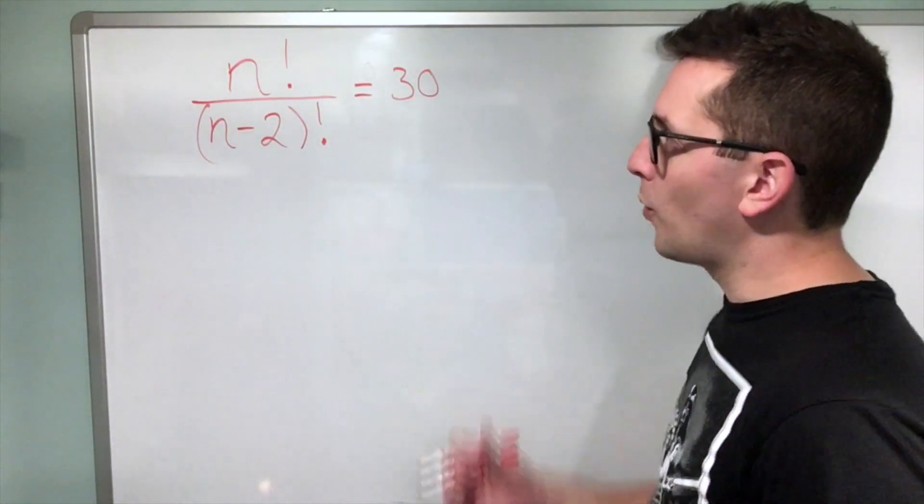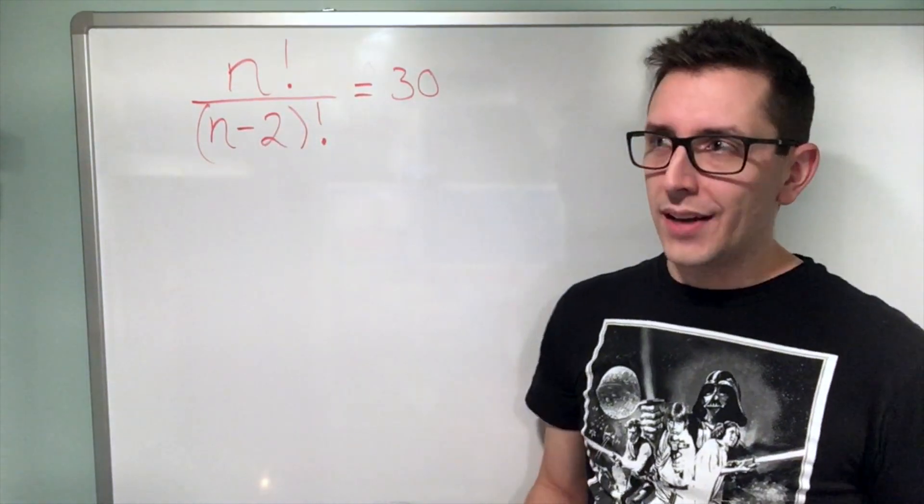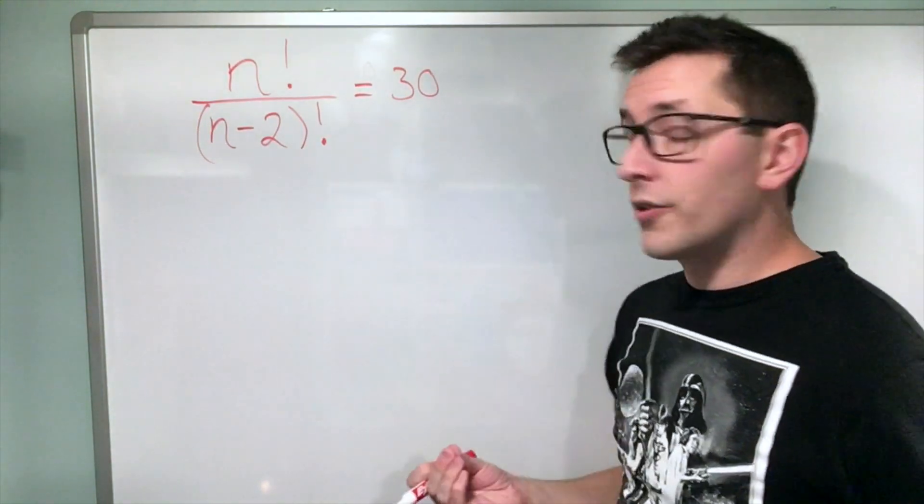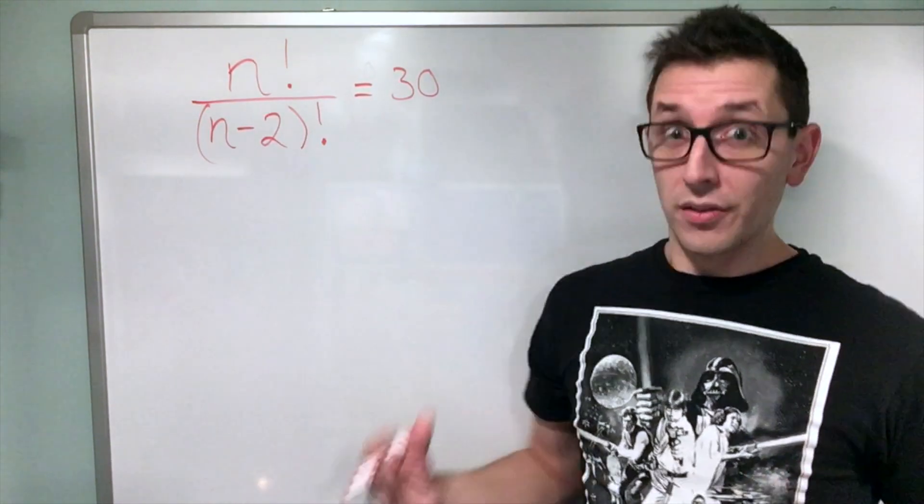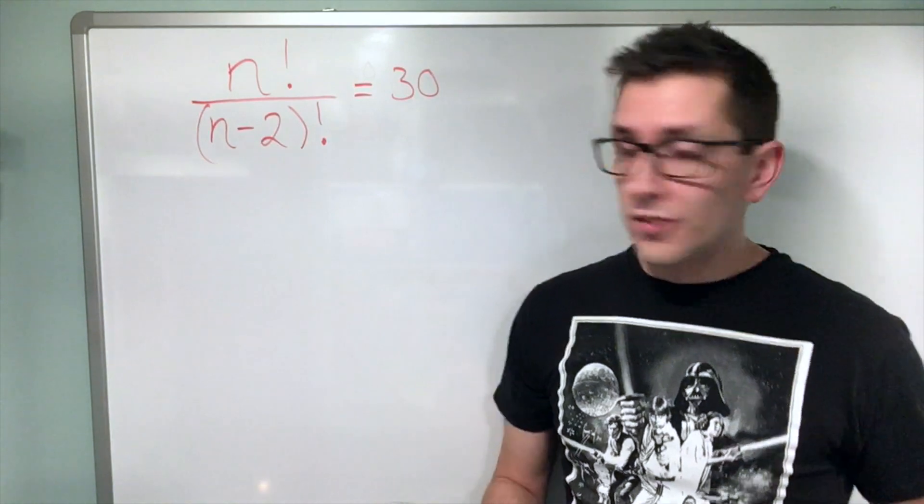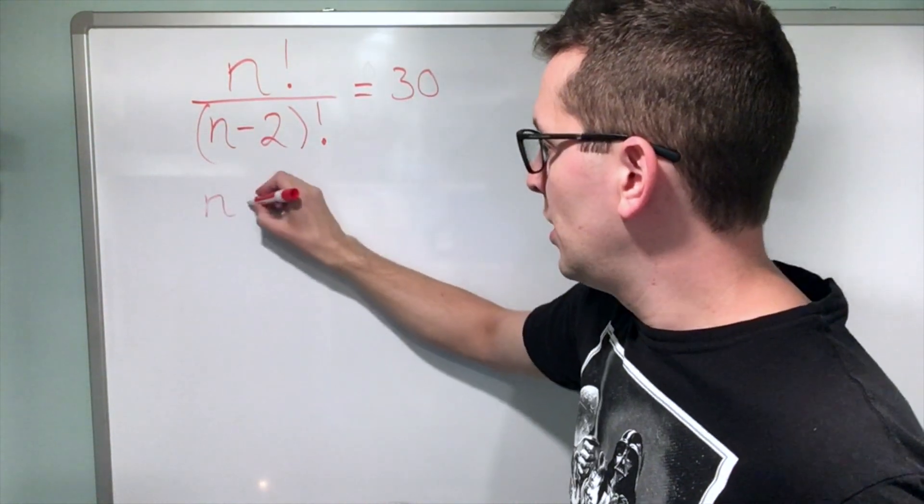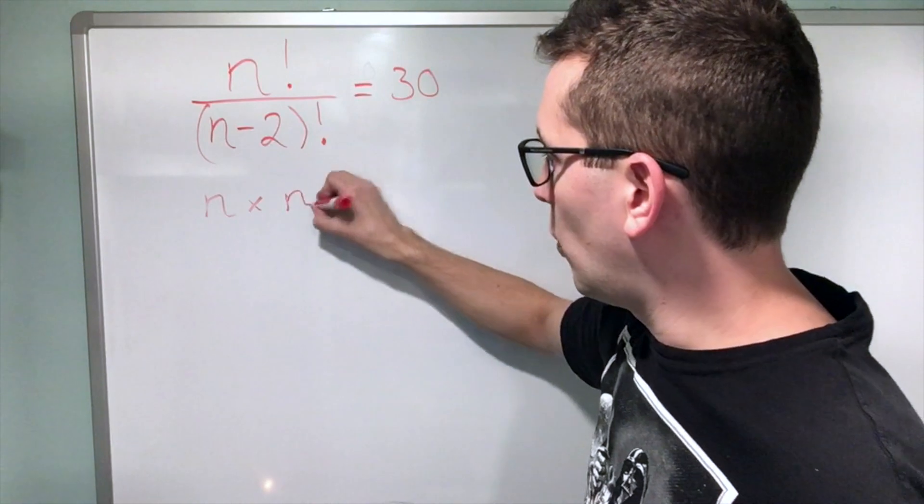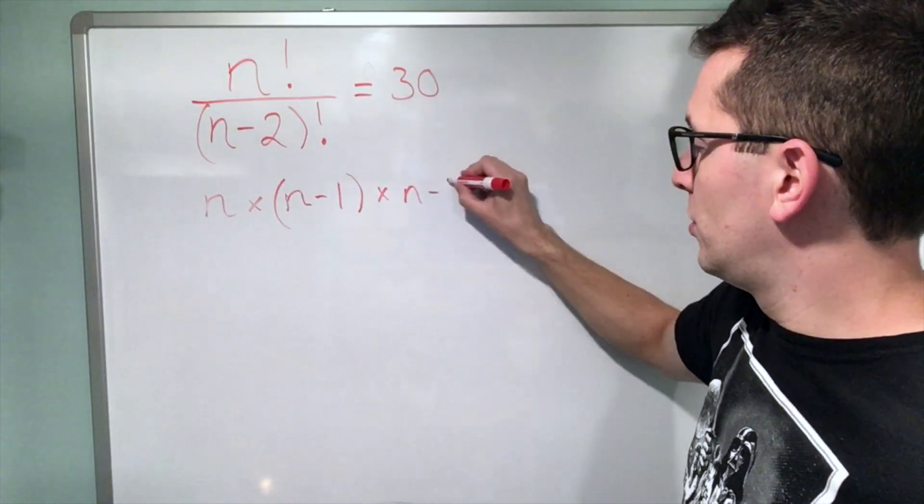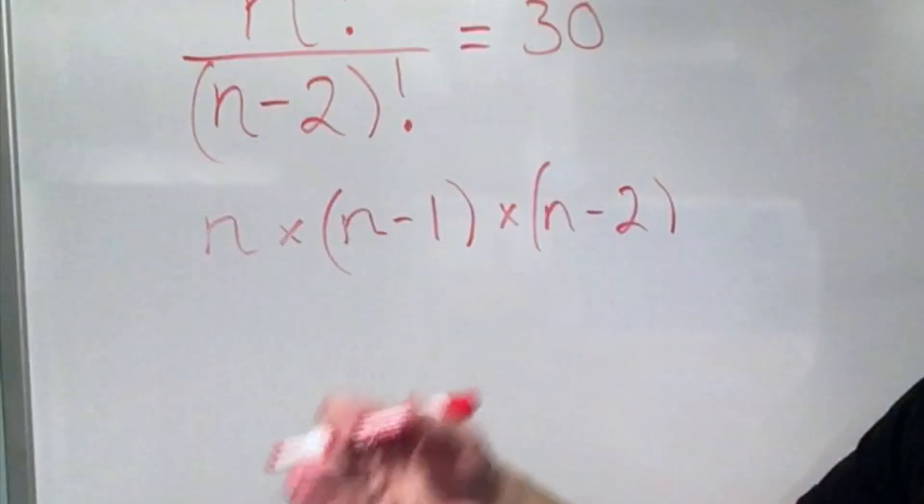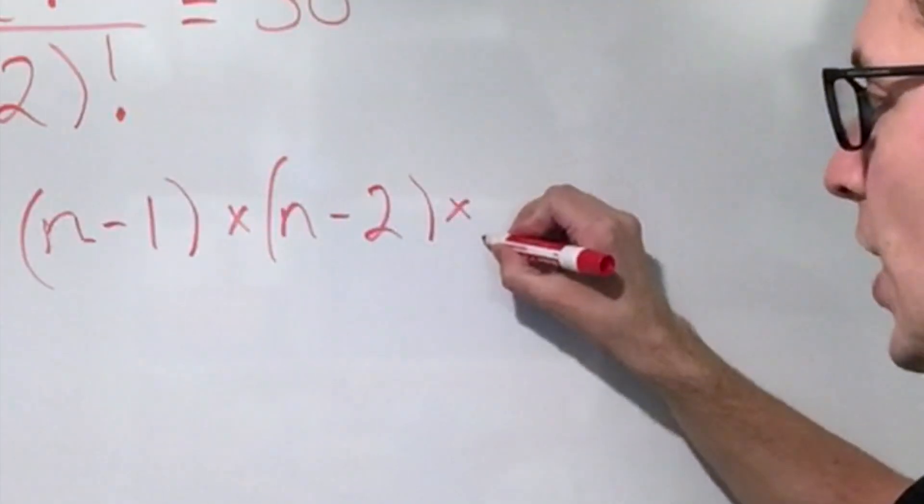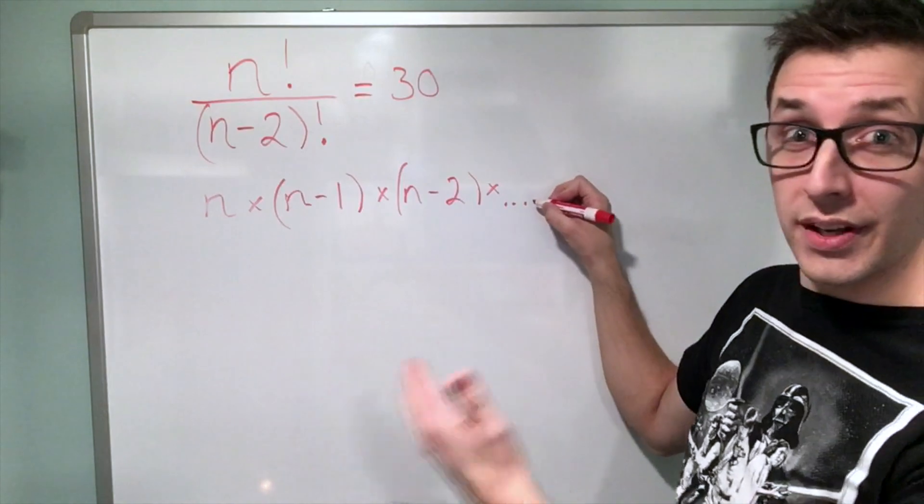Alright, so the first thing I want to do is look at this n factorial. I don't like the fact that there's a factorial in this equation. So I'm going to apply my understanding of factorials to sort of get rid of the factorial. I'm going to do that by saying, well, I know by definition, n factorial is the product of n times n minus 1, or the number right before n, times n minus 2, or the number two positions before n, and so on. And I'm going to indicate the so on by just putting a times and a dot dot dot, because this really continues on forever.